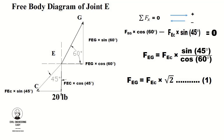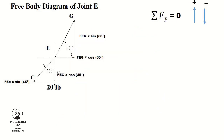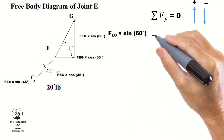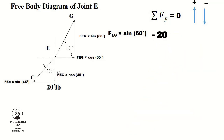We still have to use the second condition of equilibrium: ΣFy = 0. Vertical forces acting upward are positive and downward forces are negative. The force FEG × sin(60°) acts upward — take it as positive. The 20-pound force acts downward at point E — take it as negative. The force FEC × sin(45°) also acts downward — take it as negative.